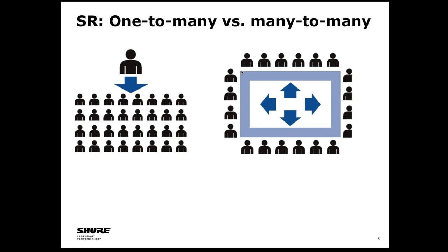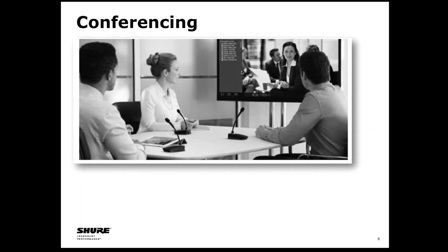Sound reinforcement is the primary purpose of many sound systems. When you talk about conferencing, it's still somewhat like a sound reinforcement system, except the person listening is at a remote location. The microphones on the table are only for the people in this room to be heard by folks at the other location, since these folks are all sitting close enough that no sound system is required. Microphones transmit their sound to the far site; microphones at that location pick up those participants and play back into this room through loudspeakers.